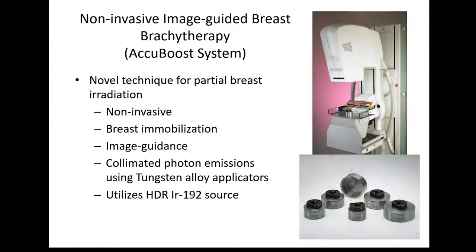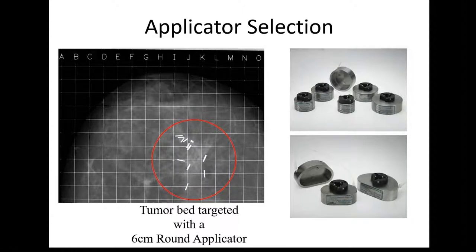The setup is straightforward: take a mammographic image with a targeting grid overlaid. With the mammogram we can readily see where the post-op changes are in the breast — often made easy by surgical clips, though as I'll show, clips are not always necessary. There are also various applicators to choose from for individual lesion size and shape.